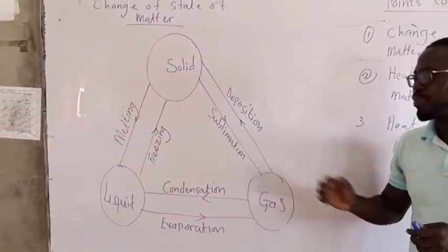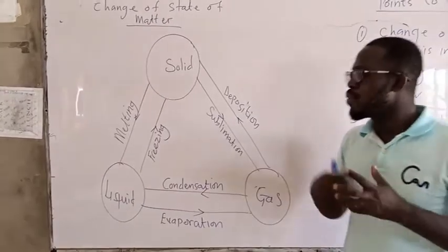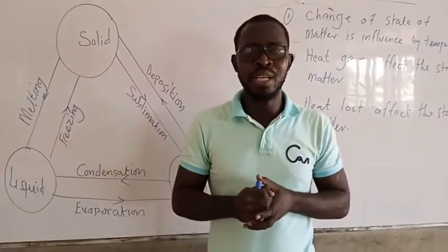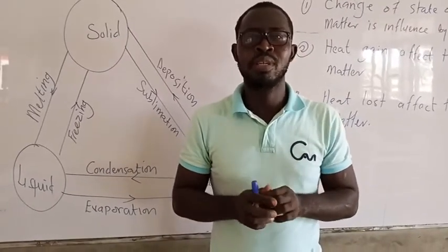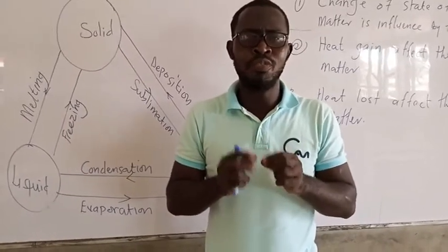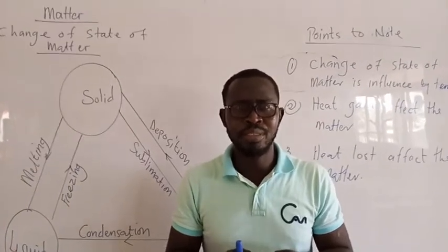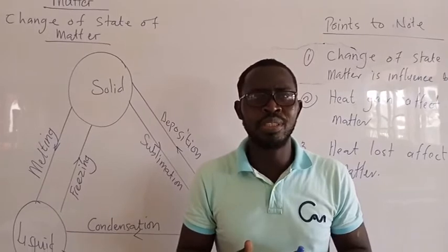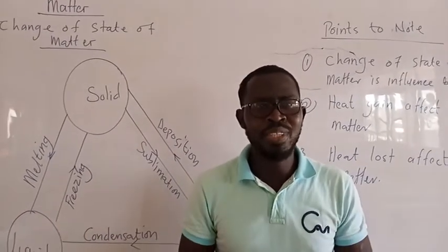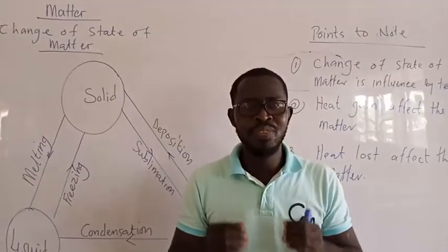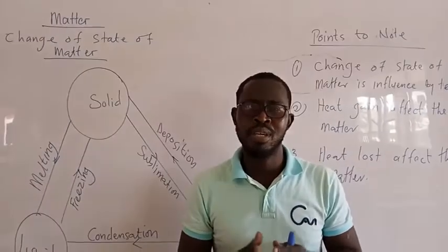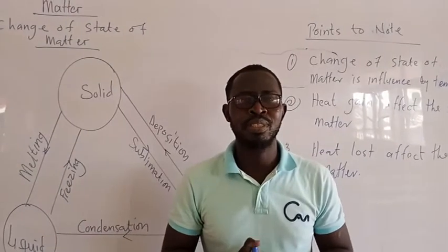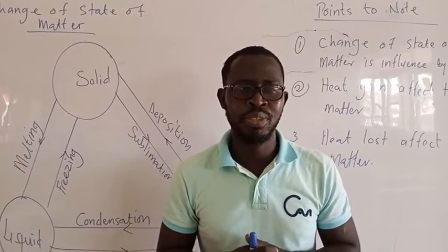I want you to go through all this, play the video again, listen carefully, and read from your materials at home. Then I want you to come out with concrete answers for today's assignment. Today's assignment is a very simple one. Write all the states of matter — that is solid, liquid, and gas. Then define every process: what is sublimation? What is condensation? What is evaporation? Define everything and give three examples each under every process. I'll see you in our next class. When you are done, forward it to me on my WhatsApp number 0547-695-569. Thank you.